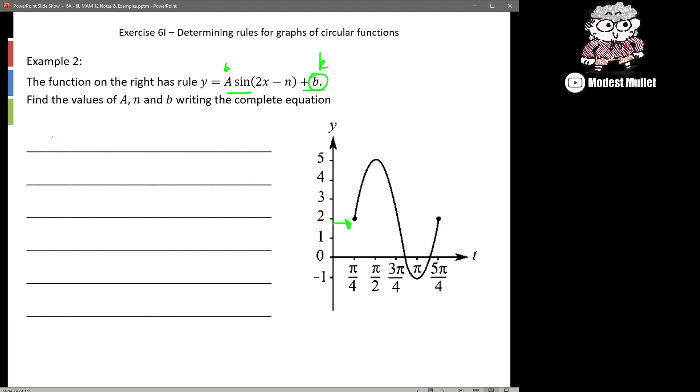So let's rewrite our rule first where y = a sin(2(x - n/2)) + b. From here now we can start to just read off all our values. So what is our amplitude? Well we go from 2 up to 5, so my a is equal to 3.